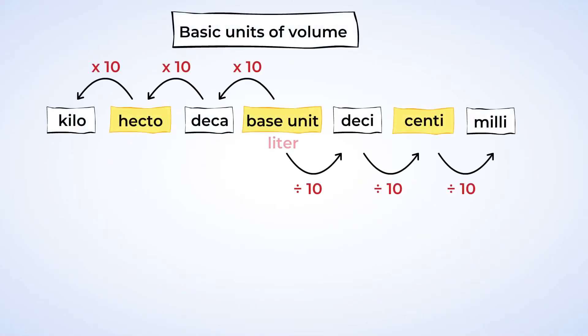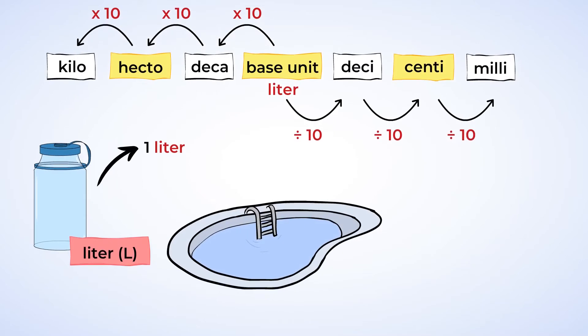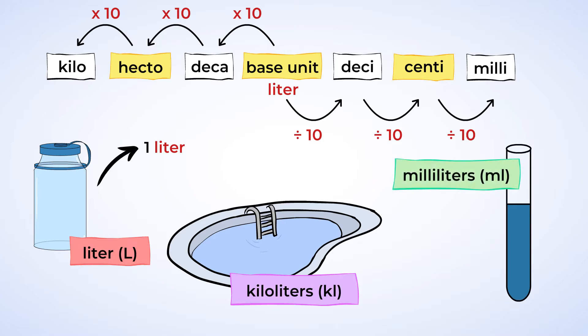And what about volume? Volume uses liters. A large reusable water bottle is about 1 liter. When you have more liquid, like a pool, you're going to use, yep, you guessed it, kiloliters. And when you have a smaller amount, like the amount of water in a test tube for science class, you'll probably use milliliters.